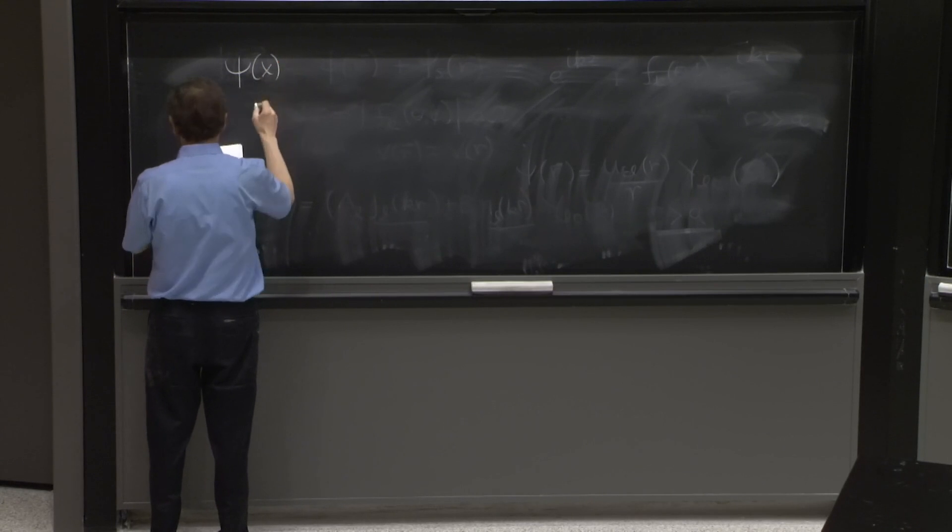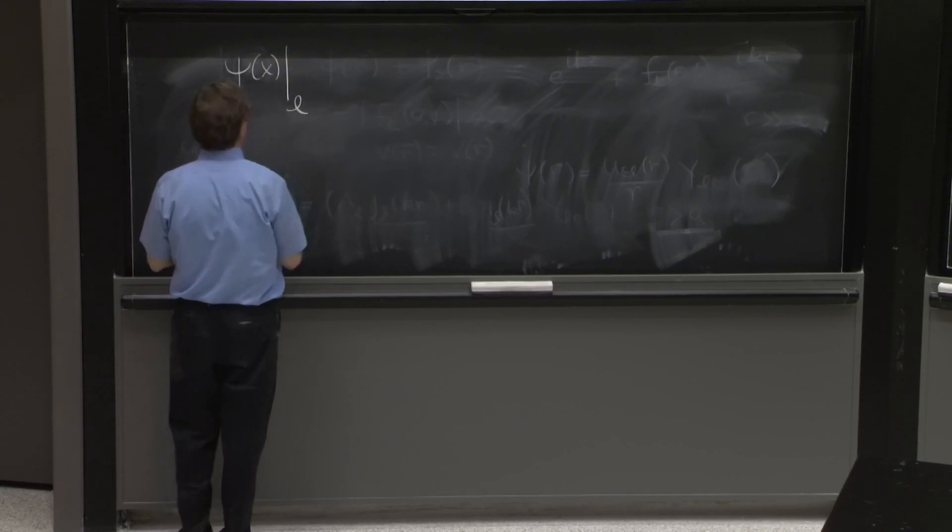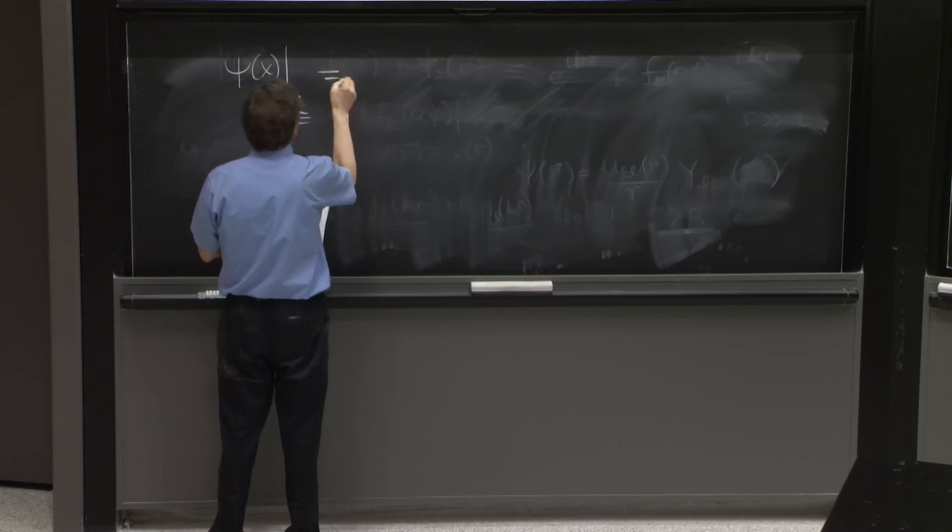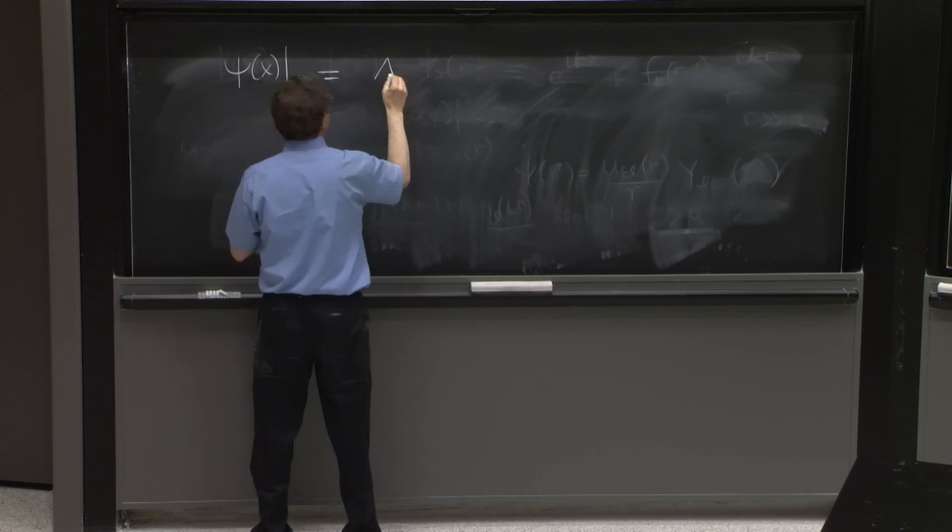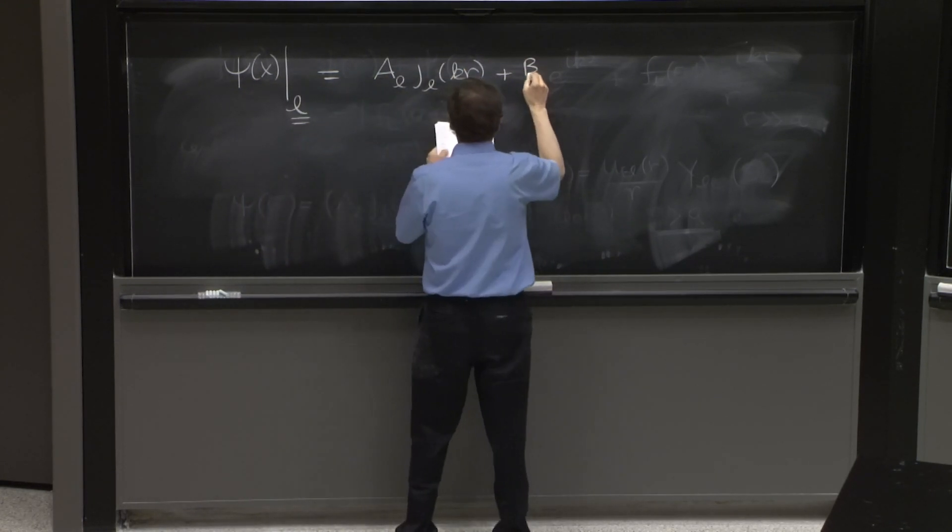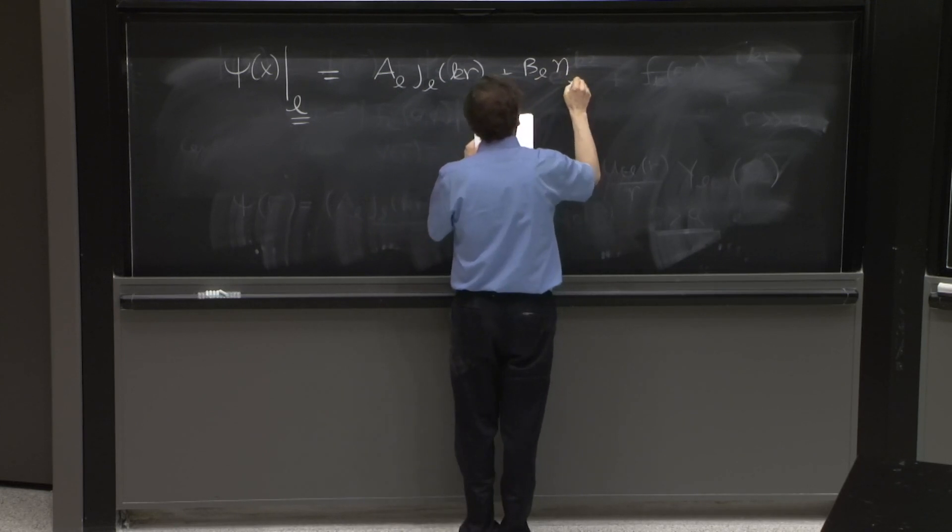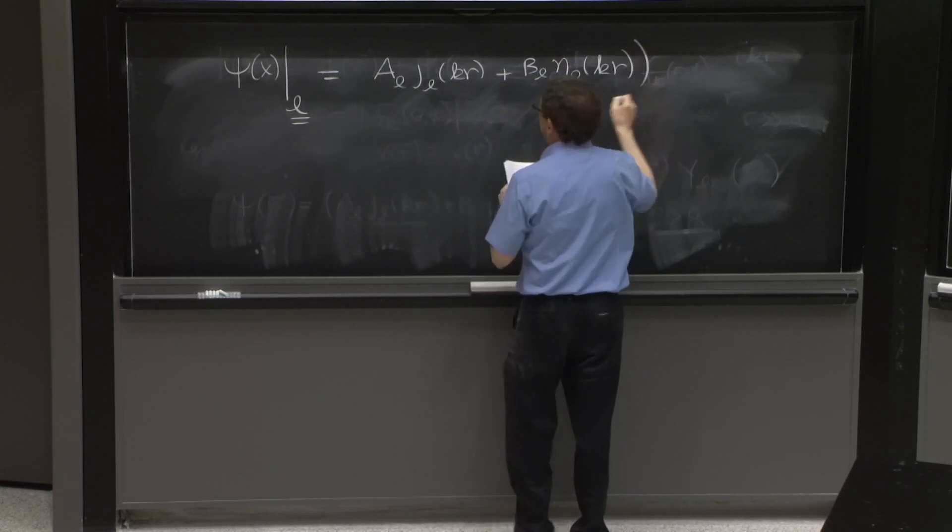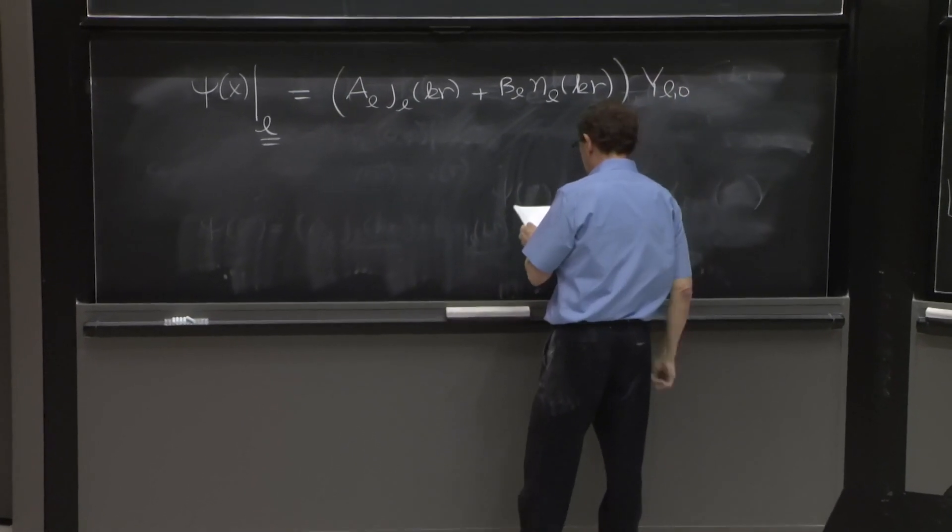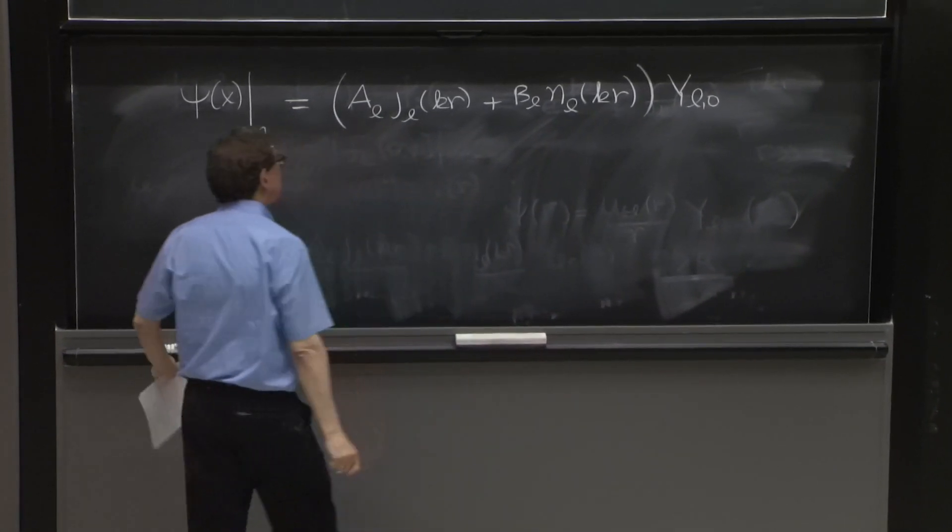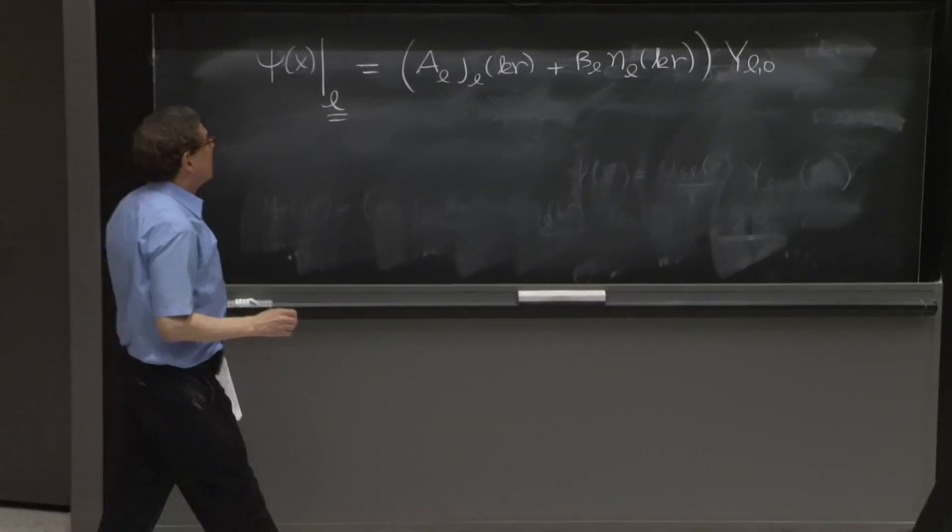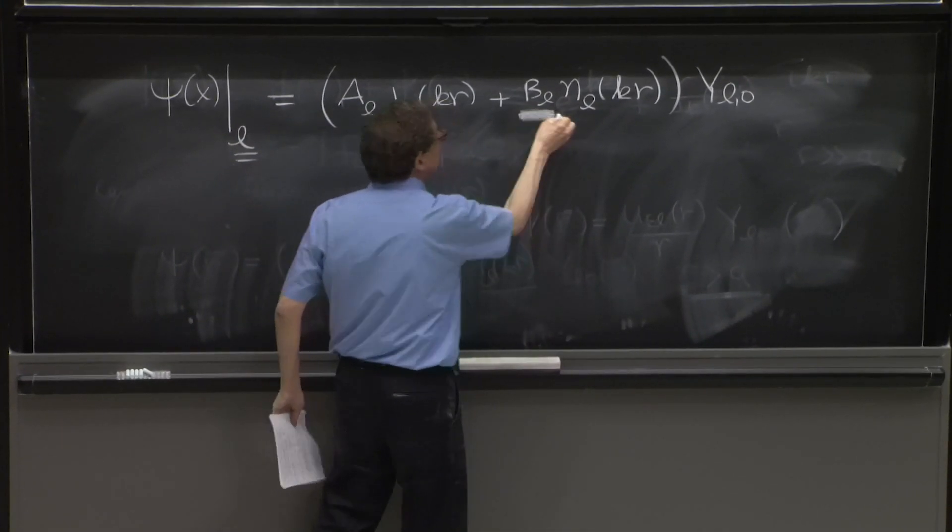So suppose you have your wave again. And for a fixed L, a given partial wave, this is the full solution for the scattering problem. It is an AL JL of kr plus BL NL of kr YL0. That's your solution. The signal that you got scattering, and you have something not true, is the existence of this term.